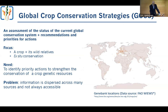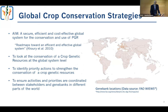The global crop conservation strategies are basically an assessment of the current status for the conservation of a specific crop and its crop-wide relatives. They generally have an emphasis on ex-situ conservation, but some also have sections on in-situ conservation. They respond to the need of synthesizing information scattered across many different places, making sense of this information, and identifying priorities for actions and recommendations. The idea is that this could help increase the efficiency of the global conservation system for these crops and achieve better coordination among the different stakeholders.